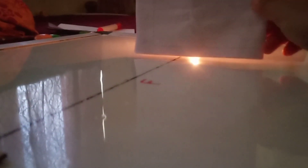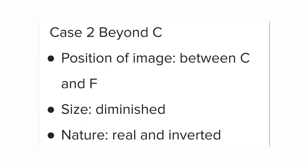Now case two: the object is kept beyond C — closer than infinity but still beyond C. We keep the paper and try to obtain the image of the light source. After adjusting, the image is formed somewhere between C and F. Its size is small, not a point but still small, and the nature is real and inverted.